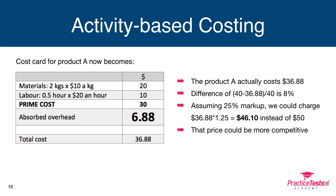Let's see how the cost card for product A changes using ABC. We still have our prime cost of $30, but now the overhead absorbed is $6.88 rather than the $10 under traditional absorption costing, giving a revised total cost of $36.88 — about 8% lower than the $40 before. This has serious implications: applying our 25% margin gives a price of $46.10 instead of $50, which could make all the difference between being competitive or not. We may have been overcharging due to the simplistic way overheads were absorbed.